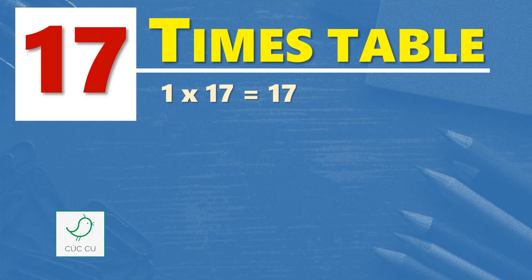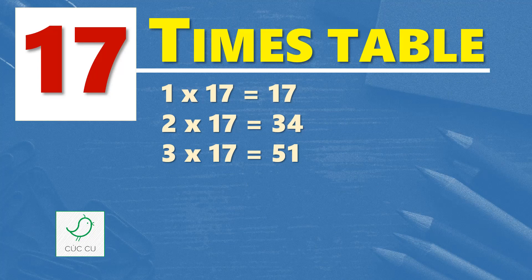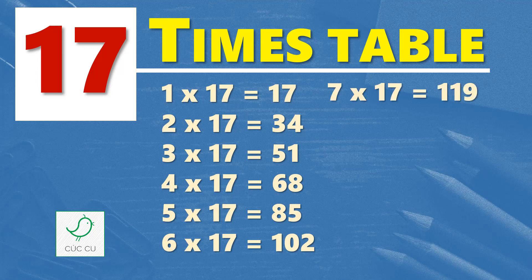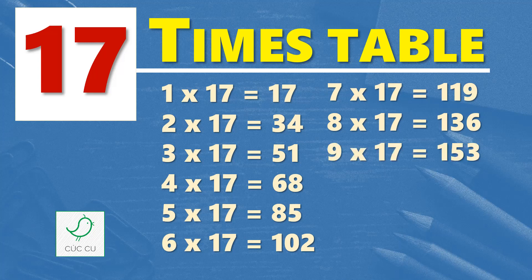Seventeen times table. One times seventeen is seventeen, two times seventeen are thirty-four, three times seventeen are fifty-one, four times seventeen are sixty-eight, five times seventeen are eighty-five, six times seventeen are one hundred and two, seven times seventeen are one hundred and nineteen, eight times seventeen are one hundred and thirty-six, nine times seventeen are one hundred and fifty-three, ten times seventeen are one hundred and seventy.